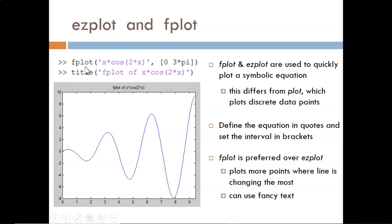The first input argument is the expression to be plotted. The full equation would read y equals x times cosine of 2x, but we leave out the y equals. The second input argument is the domain of x across which to plot. 3 times pi is a number a little above 9, so we see that the x-axis goes from 0 to just above 9.